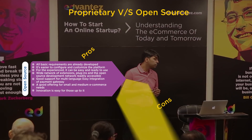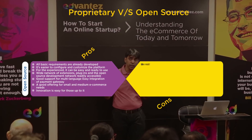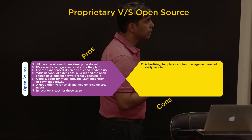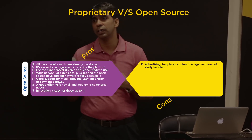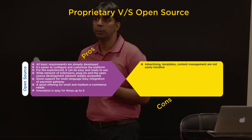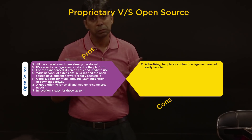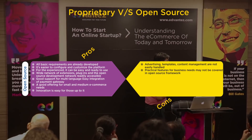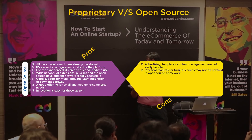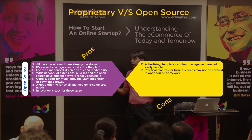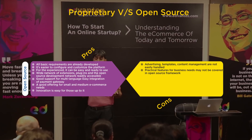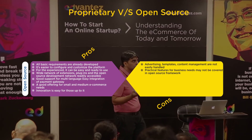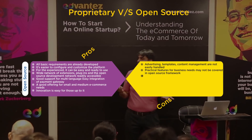What are the cons of open source? Some things are not easy — like advertising and content management are not easy in open source software. Practical features of your business may not be available in open source. For example, building a custom diamond ring configurator — it's a practical business requirement but open source may or may not have it.